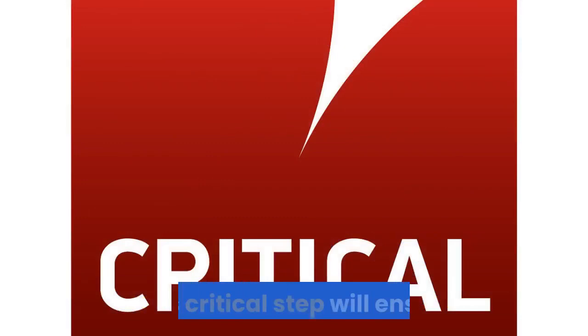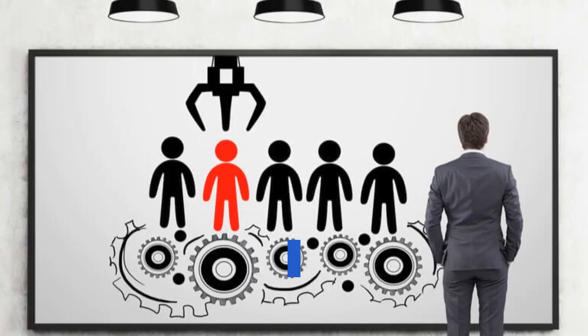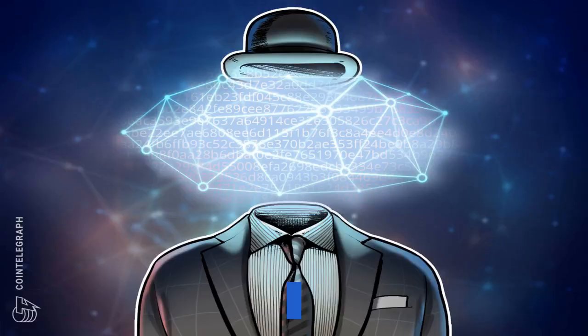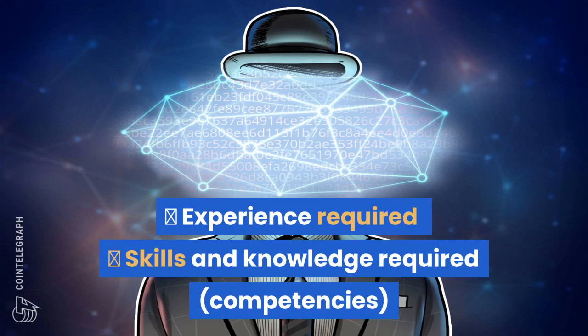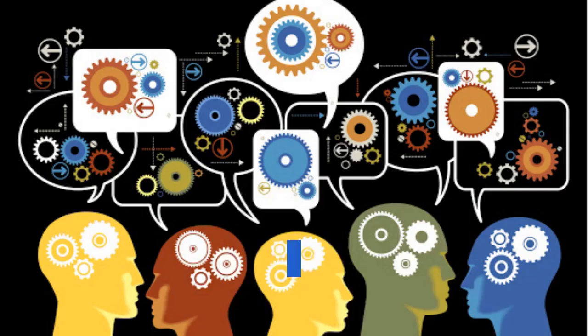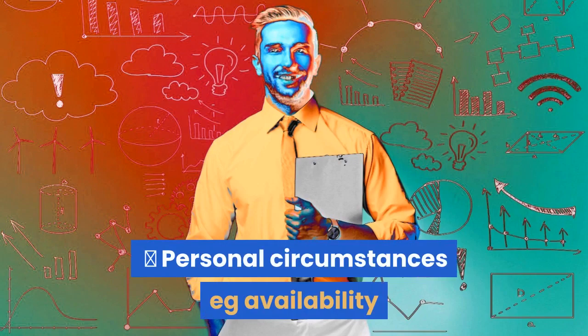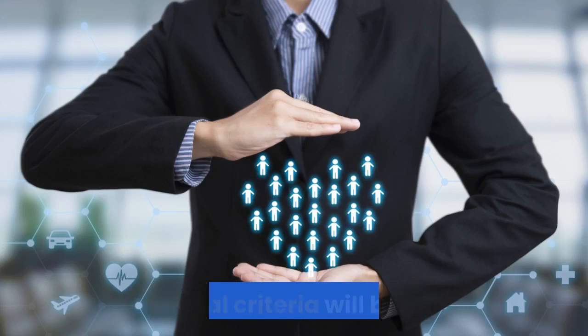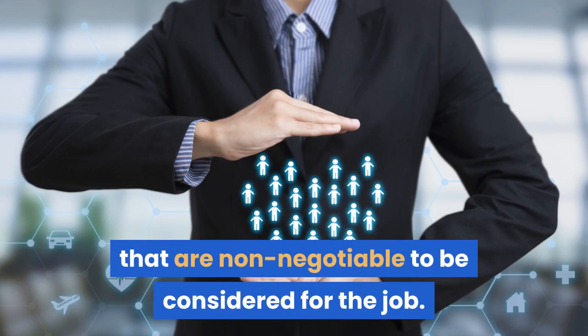Crafting the talent description. This critical step will ensure that your job is matched to the right talent. The talent description should include experience required, skills and knowledge required, competency, qualification required, personal attributes such as software skills, personal circumstances such as availability, and essential and desirable criteria. Essential criteria will be those that are non-negotiable to be considered for the job. Desirable are preferred criteria that can be used when prioritizing candidates.